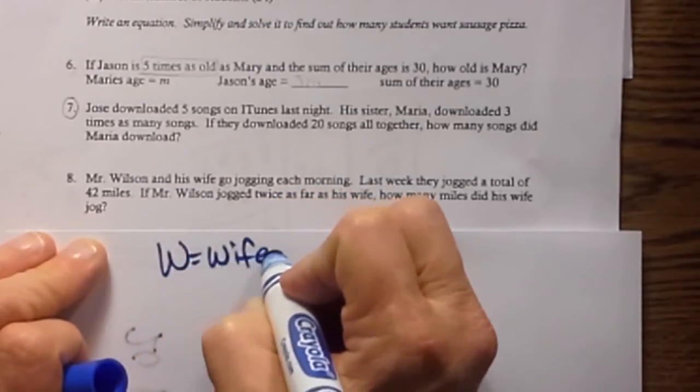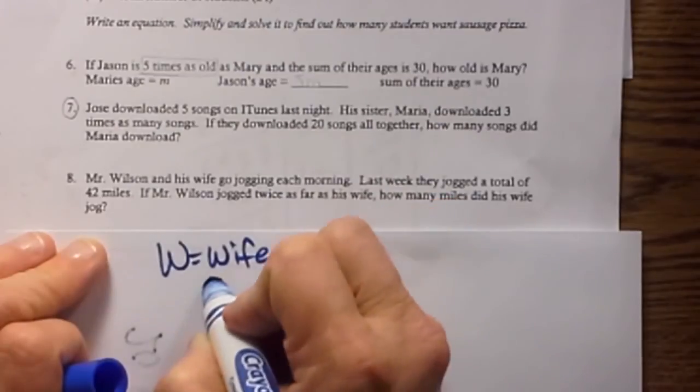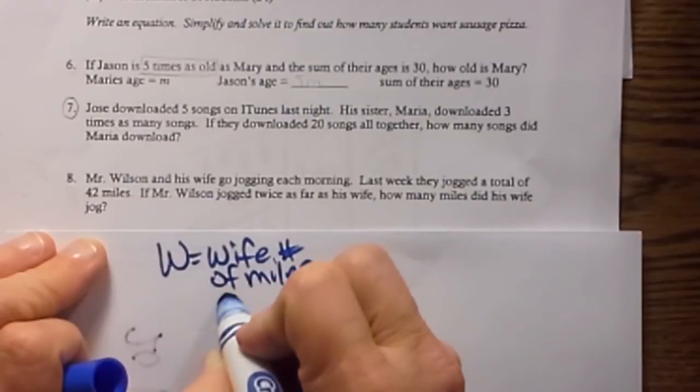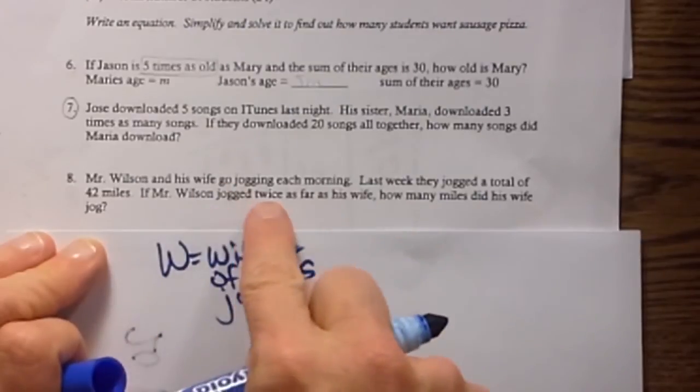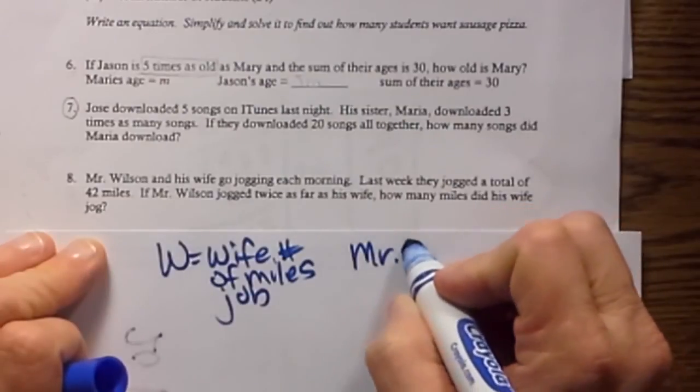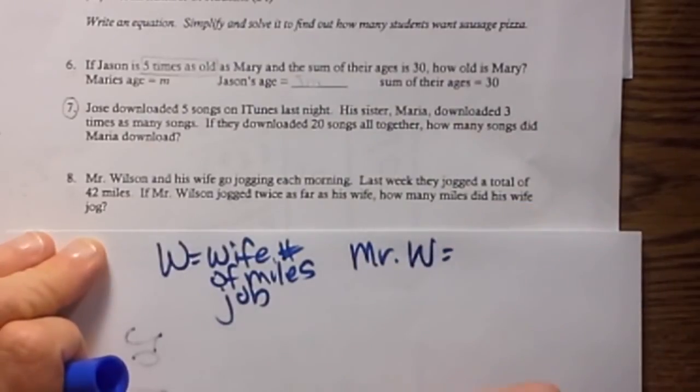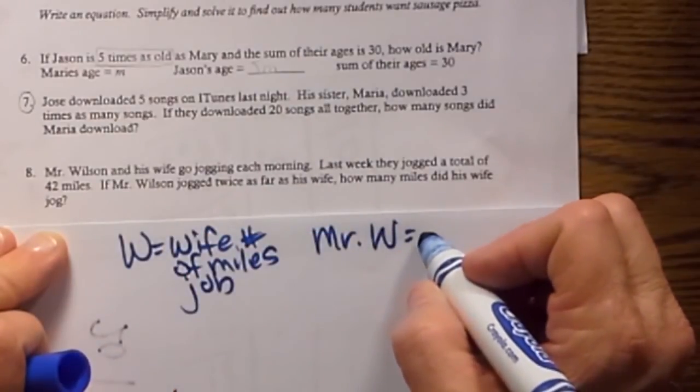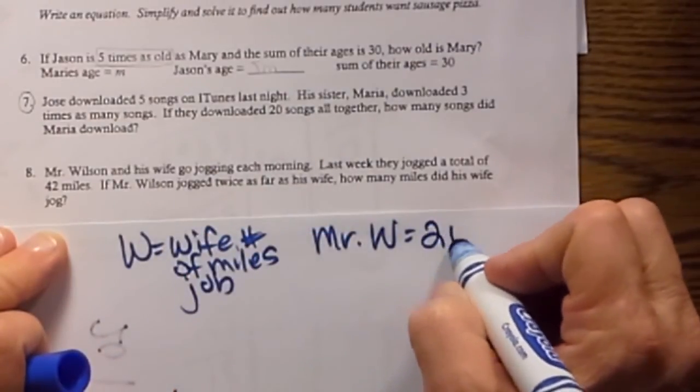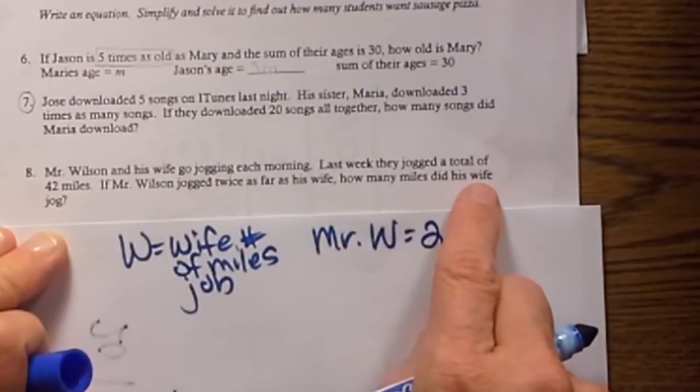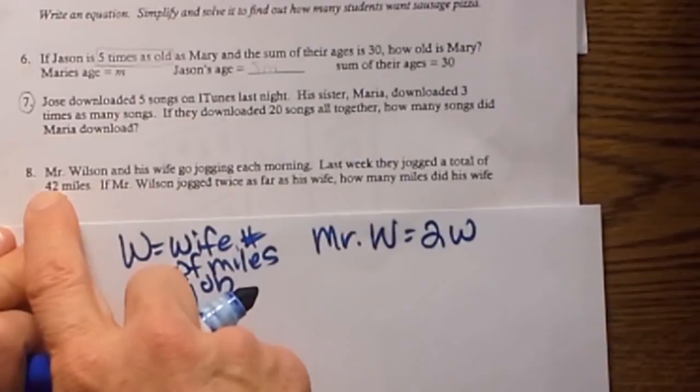So let's call his wife W. Okay, that is the wife's number of miles jogged. And so he jogged twice. Okay, so Mr. Wilson, I'll just call him Mr. W. His mileage would be equal to 2W. Twice what his wife did. But together they jogged 42 miles.